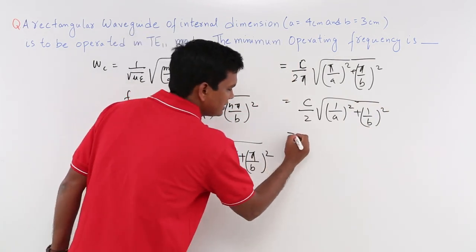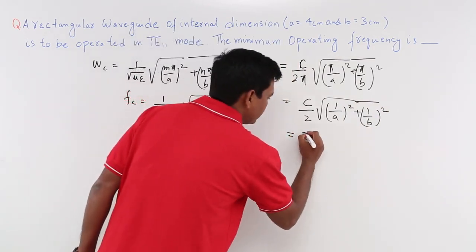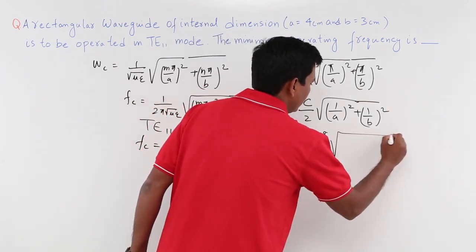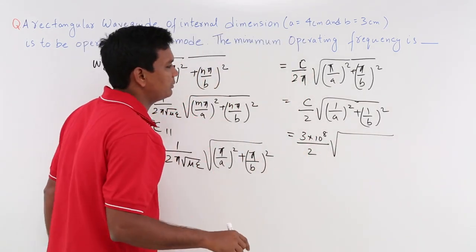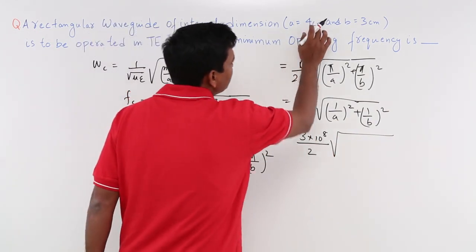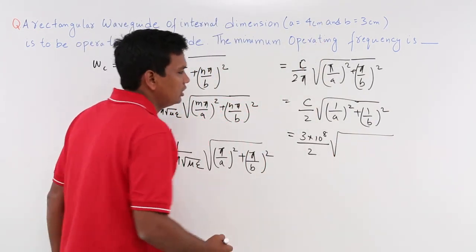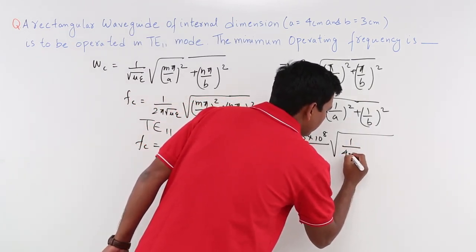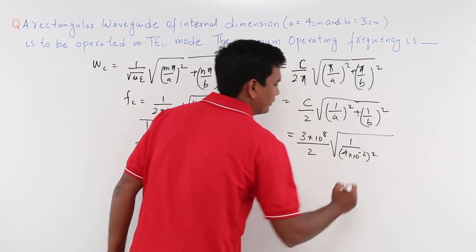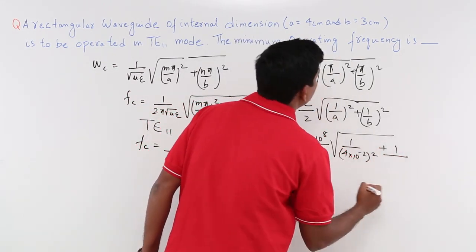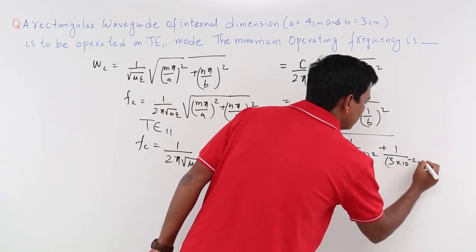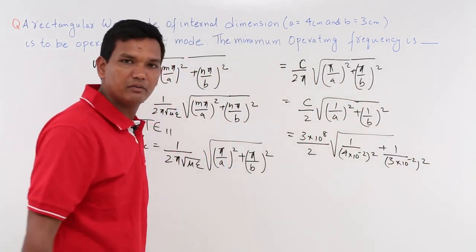What is c? c is 3 into 10 power 8. So 3 into 10 power 8 meter per second divided by 2 root over what is A? A is given as 4 centimeter. Remember all the calculation we are doing in meters. So this would be 1 by 4 into 10 power minus 2 the whole square plus 1 by 3 into 10 power minus 2 the whole square. I have converted into meter.